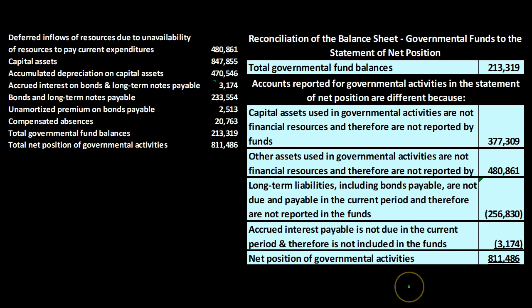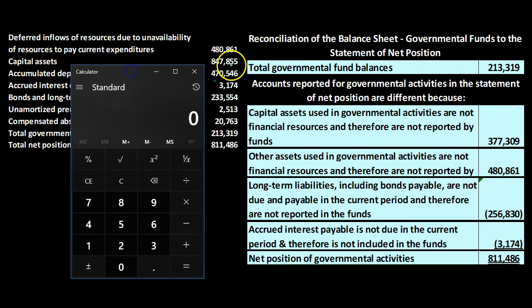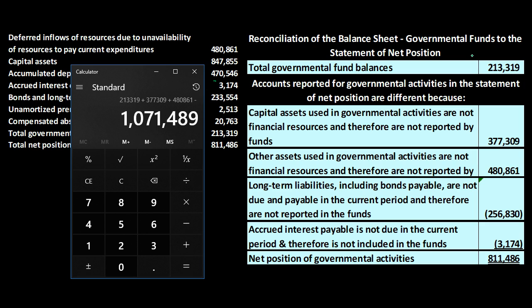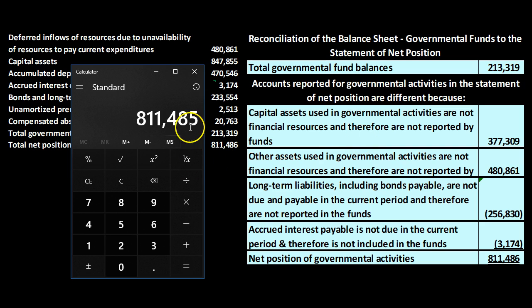If we sum this up, the total is the net position of the governmental activities. In summary: we take the total governmental fund balances and reconcile to the net position of governmental activities — funds on modified accrual to governmental activities on accrual basis — simply listing the differences between the two. Adding them up: 213,319 plus 377,309 plus 480,861 minus 256,830 minus 3,174 gives us 811,485 (with a minor rounding difference).